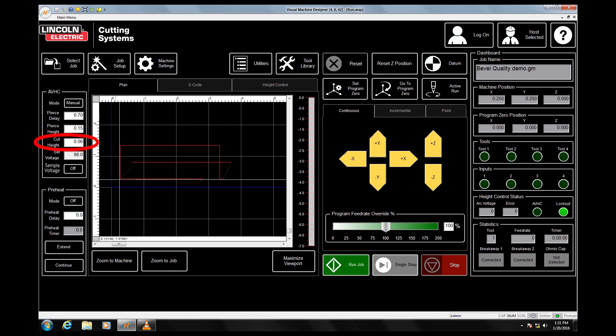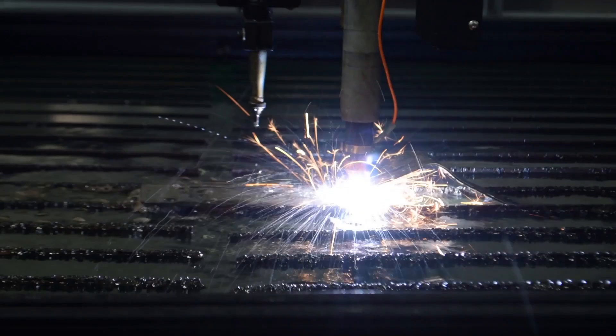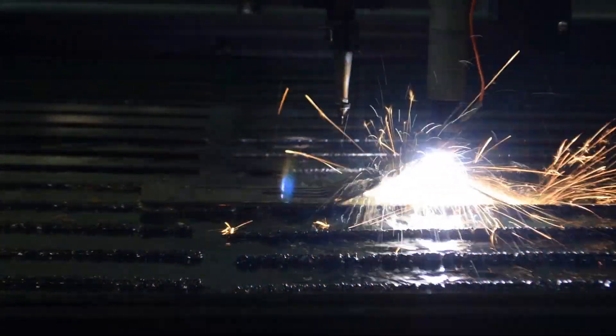Switching it to manual will read from the cut height input and will not allow the torch to deviate from this height. Auto will reference the set voltage input and adjust the torch height control to maintain this voltage throughout the cut. As the arc voltage grows or shrinks, the Z-axis will adjust the torch height up or down to regulate the sensed voltage back to the programmed voltage.